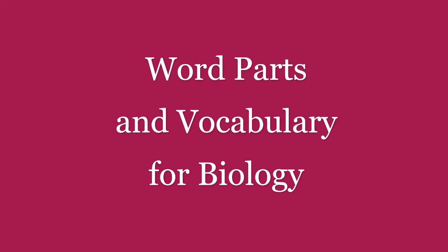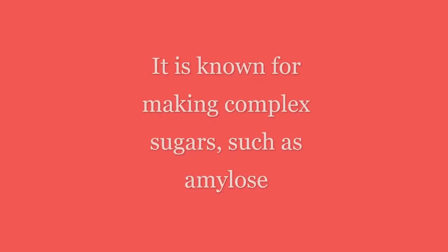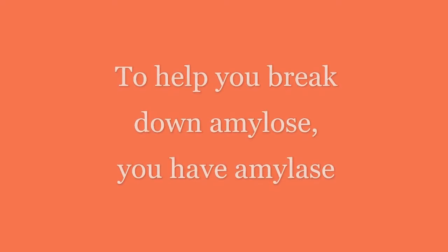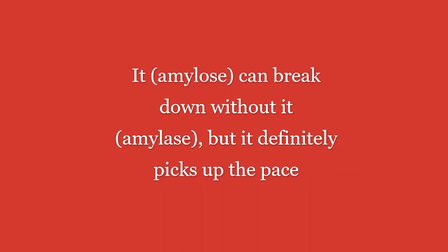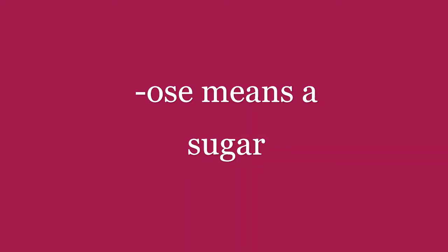A very famous sugar is known as glucose. It is known for making complex sugars such as amylose. To help you break down amylose, you have amylase. It can break down without it, but amylase definitely picks up the pace.